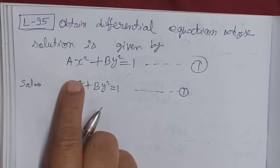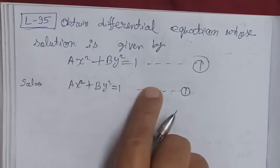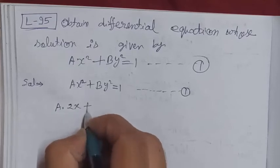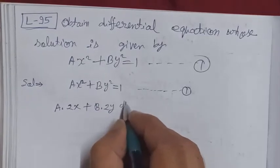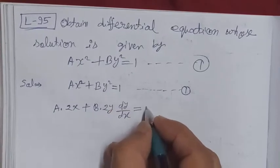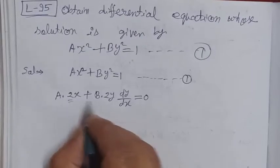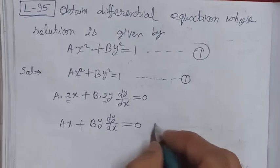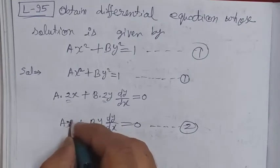Differentiating equation one with respect to x, we get 2ax plus 2by times dy/dx equals 0. The differentiation of the constant on the right-hand side is zero. Dividing the whole equation by 2, we get ax plus by(dy/dx) equals 0. We call this equation number 2.